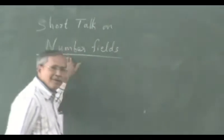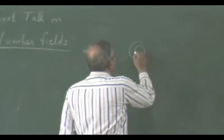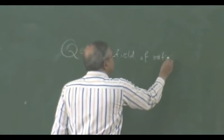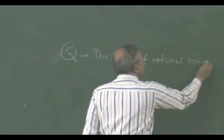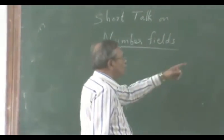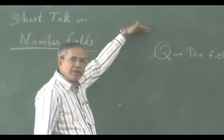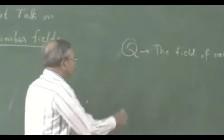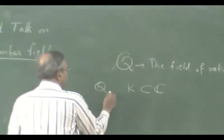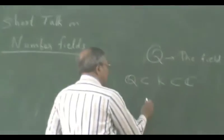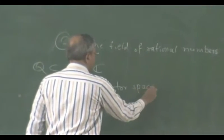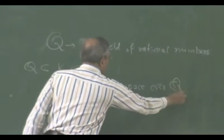Number fields — that is my topic. I start with Q, the field of rational numbers. If I have a field larger than Q, then that larger field is a vector space over Q. I can consider a field K which is contained in the complex numbers and which contains the rational numbers. And this K is a vector space over Q in a natural way.